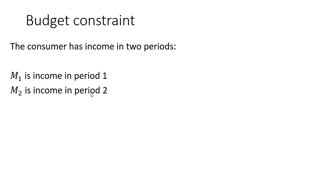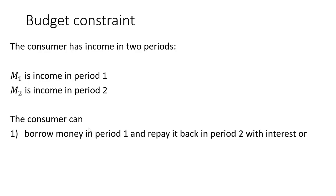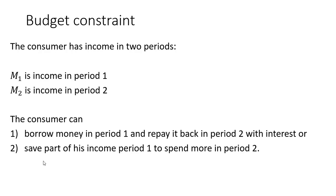The first thing we're going to do is construct the budget constraint. The consumer has income in two periods. M₁ is income in period 1, and M₂ is income in period 2. The consumer can borrow money in period 1 and repay it back in period 2 with interest, or the consumer could save part of his income in period 1, allowing the consumer to spend more in period 2. The interest rate we're going to assume is R, so you can borrow and save at an interest rate of R.